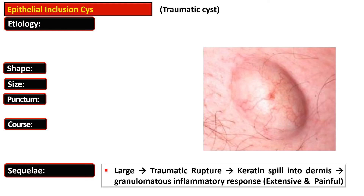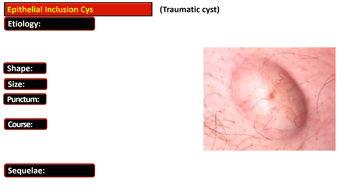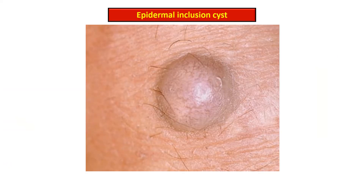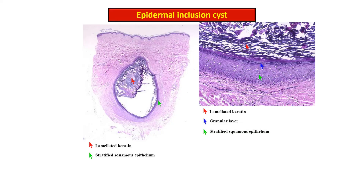When the cyst is large and ruptured traumatically, keratin spills into the dermis and induces a granulomatous inflammatory response that is extensive and painful. This is the gross lesion, showing a small dermal nodule present on the knee at the site of the laceration.